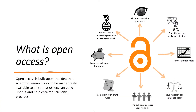Open access is built upon the idea that scientific research should be made freely available to all so that others can build upon it and help escalate scientific progress. Traditionally, the academic publishing industry has followed a subscription-based model. This model requires readers to pay for the content that they read. Typically, libraries purchase bulk subscriptions to a journal so that members or students can access the journals. But as subscription charges for journals started increasing, libraries found it increasingly difficult to purchase expensive journals. This was particularly true for libraries and institutions in developing countries where funding was scarce.